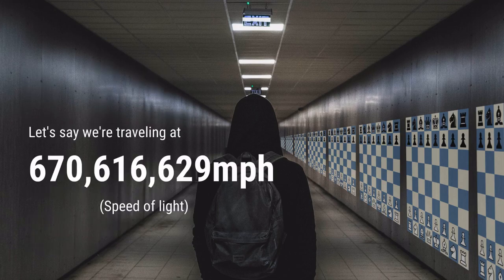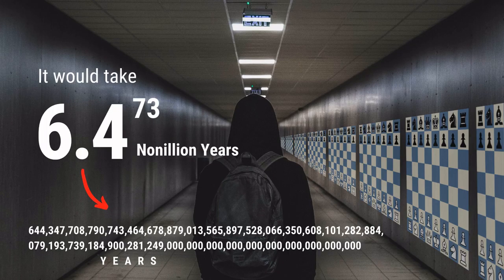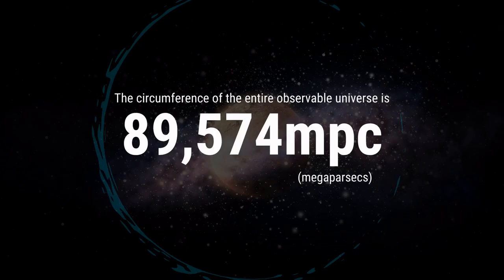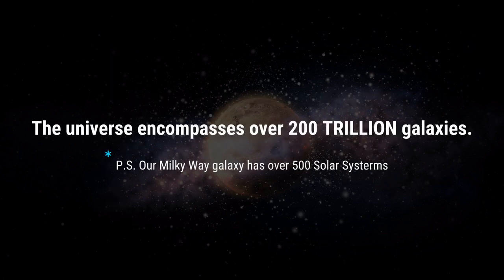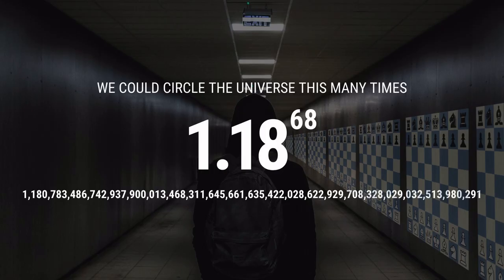Let's say we're traveling at the speed of light — around 670 million miles per hour. It would take us 6.4 to the 73rd nonillion years to see all the game possibilities. A nonillion is 1 followed by 30 zeros. Our observable universe is 89,000 megaparsecs in circumference and encompasses 200 trillion galaxies. But our universe is still way, way, way, way too small for chess. Our hallway of possible chess games could circle the universe 1.18 to the 68th power times.